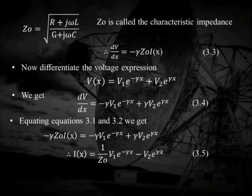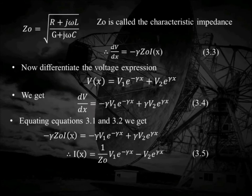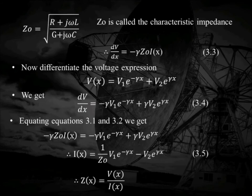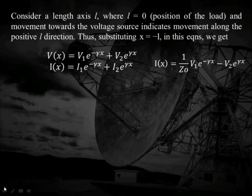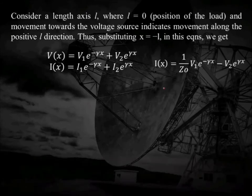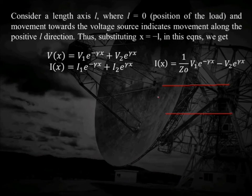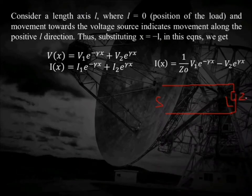To obtain the line impedance, we take the ratio of V(x) and I(x). Z(x) is nothing but the ratio of voltage to current at point or length X. Now consider a transmission line of length L, where the source is at one end and the load ZL is at the other end.